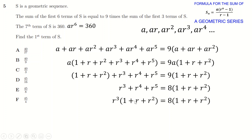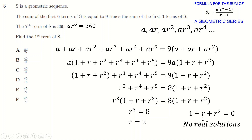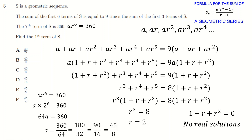Factorizing out a and grouping, I subtract one lot of the bracket from both sides, then factorize out r³. This gives either r³ = 8 (so r = 2), or the bracket equals zero — but the discriminant of that bracket is negative, so no real solutions there. With r = 2, using the seventh term: 64a = 360, so a = 360/64, which simplifies to the answer.